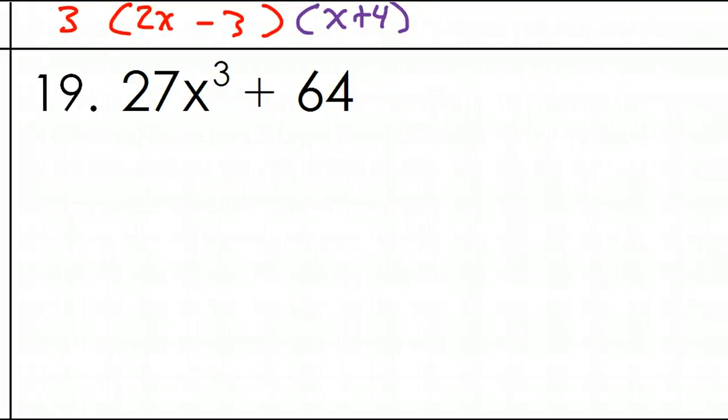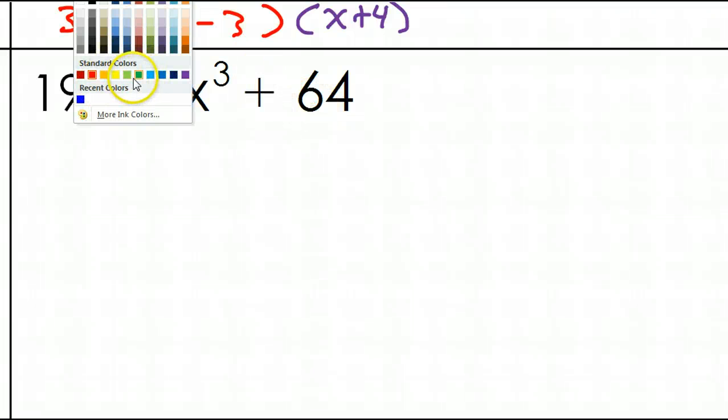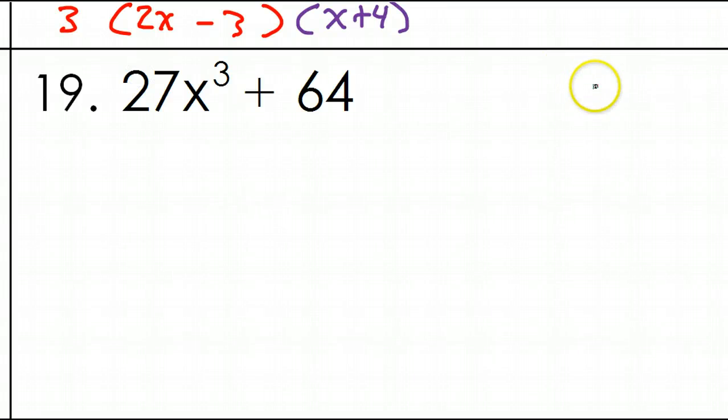Now let's take a look at number 19. Number 19 is the sum of two cubes. It helps to know the first several cubes, if for no other reason, just so you can recognize the sum of two cubes when you see it. For example, 1 to the 3rd power is 1, so that's a perfect cube. 2 to the 3rd power is 8, so 8 is a perfect cube. 3 to the 3rd power is 27, and 4 to the 3rd power is 64.